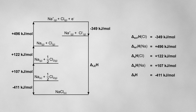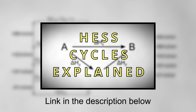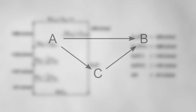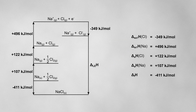The easiest way to solve this Born-Haber cycle to find the lattice enthalpy is to use the same method demonstrated in my Hess cycle video. Remember, Hess's law tells us that as long as you start in the same place and end in the same place, the overall enthalpy change will be the same. So I want to look for two routes that start in the same place and end in the same place, following the arrows around my Born-Haber cycle.